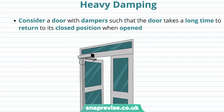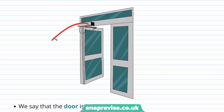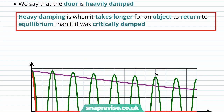Now we're going to discuss another type of damping called heavy damping. Consider a door with dampers such that the door takes a long time to return to its closed position when opened. The damper causes the door to move back to its closed position very slowly. We say that the door is heavily damped. Heavy damping is when it takes longer for an object to return to equilibrium than if it was critically damped.